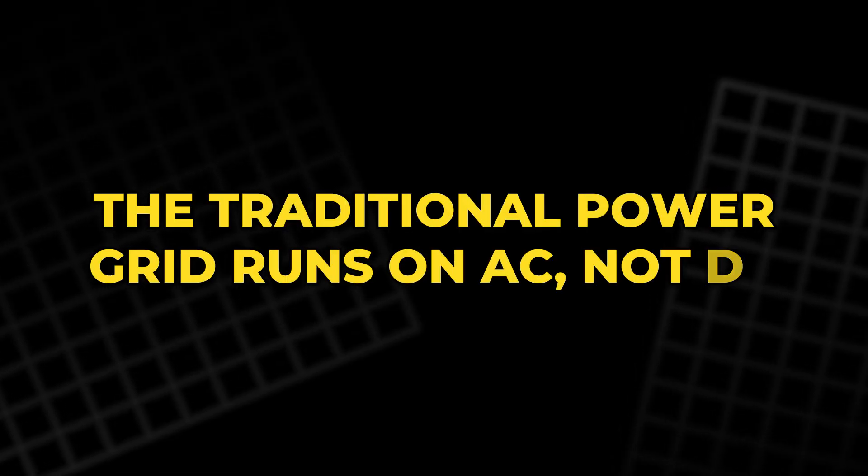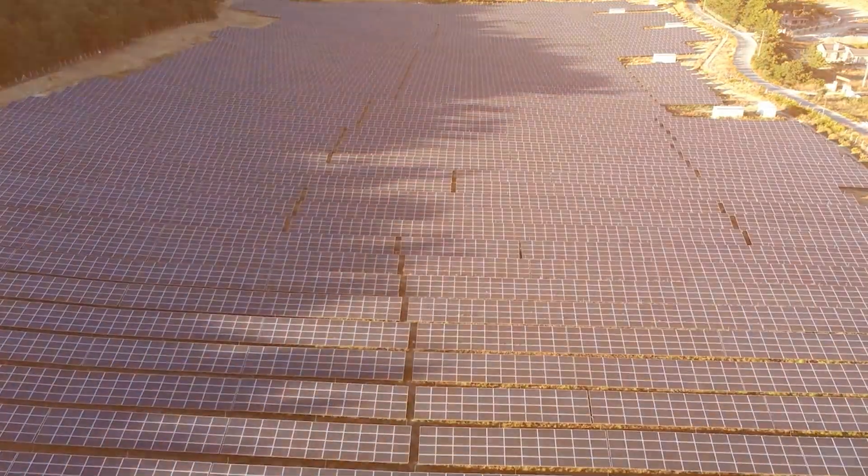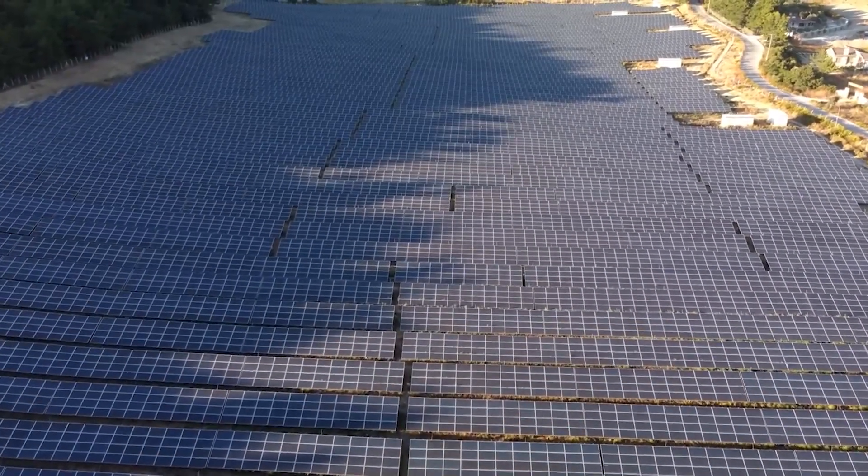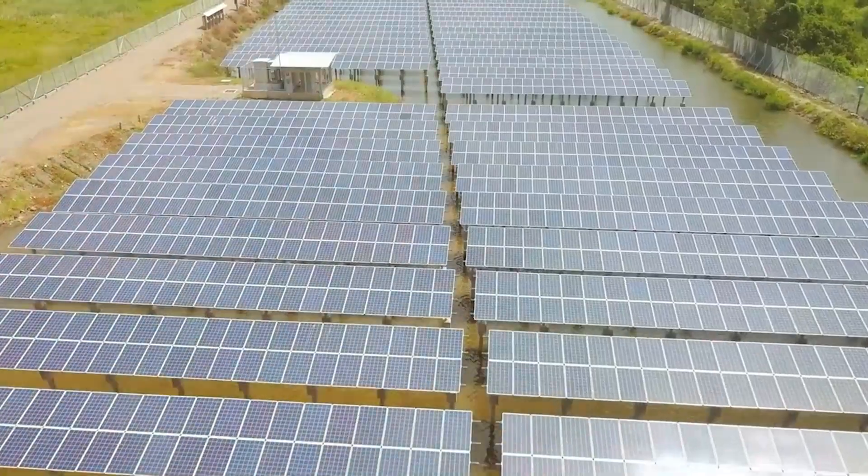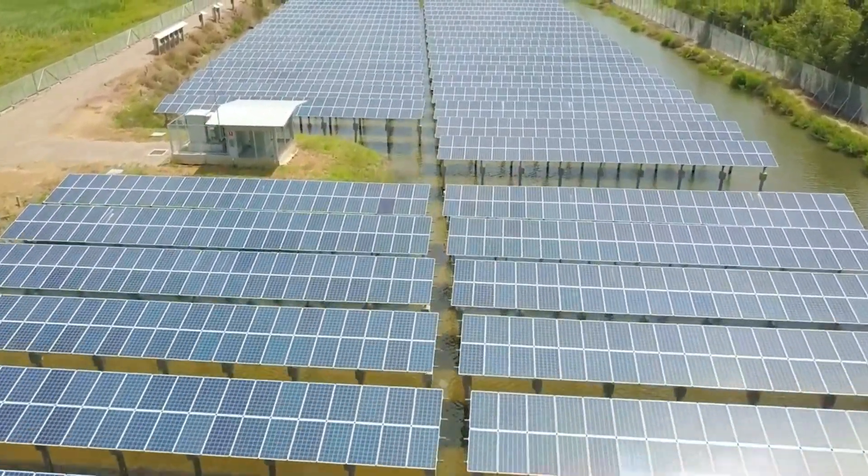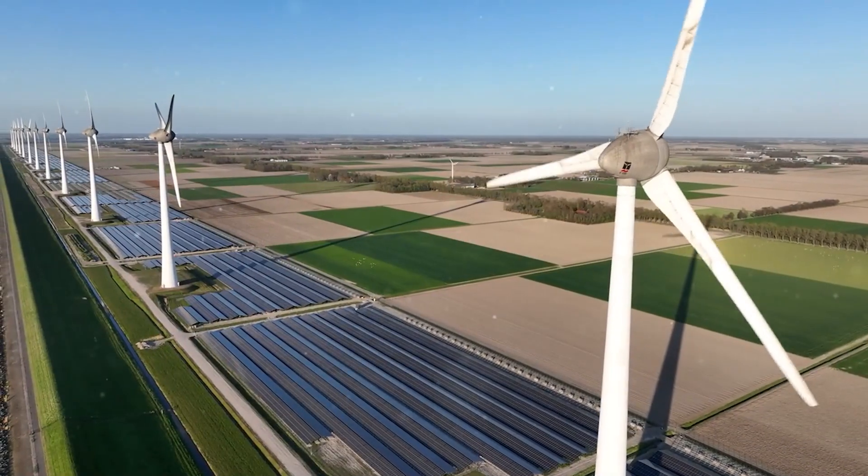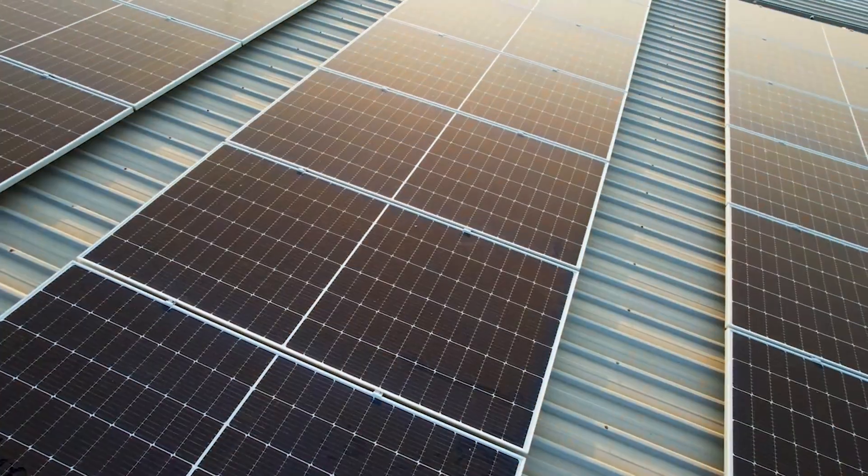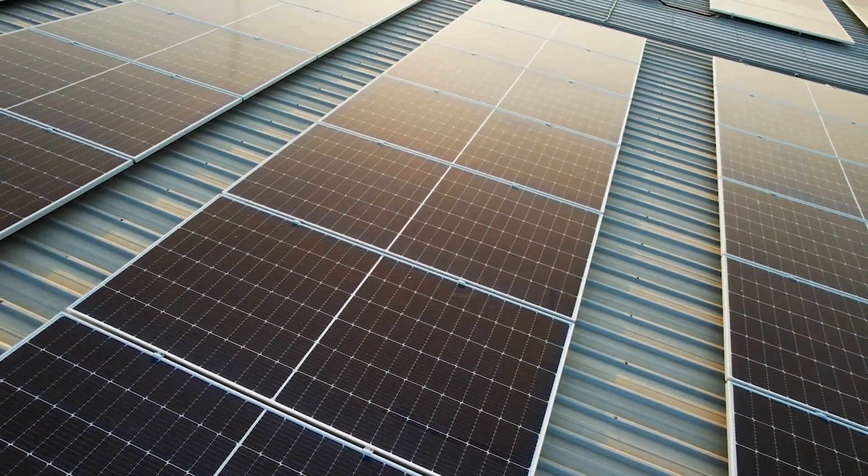The traditional power grid runs on AC, not DC, and it's designed to function smoothly with the large centralized power plants that have long been the mainstay of energy generation. But as renewable sources like solar and wind come online, they don't behave like traditional thermal power plants.